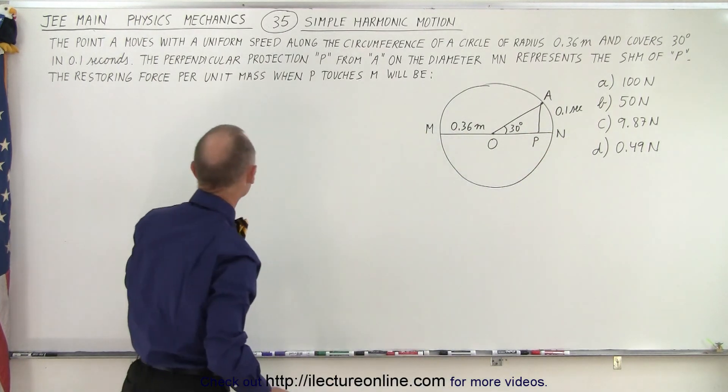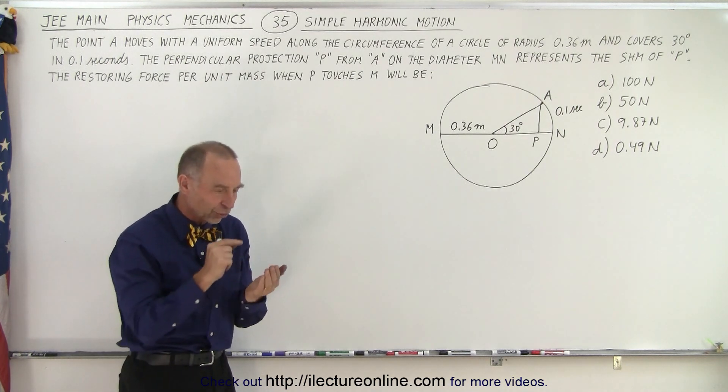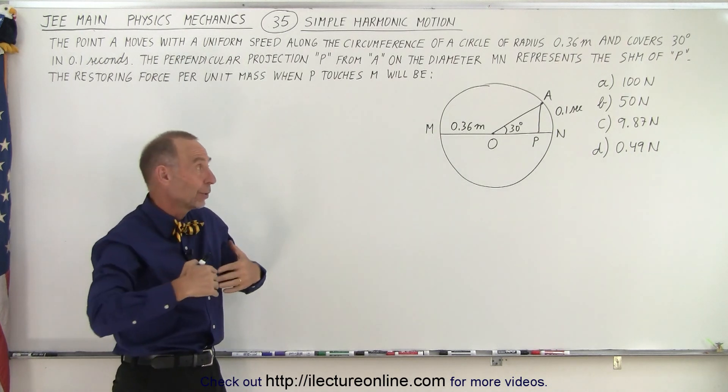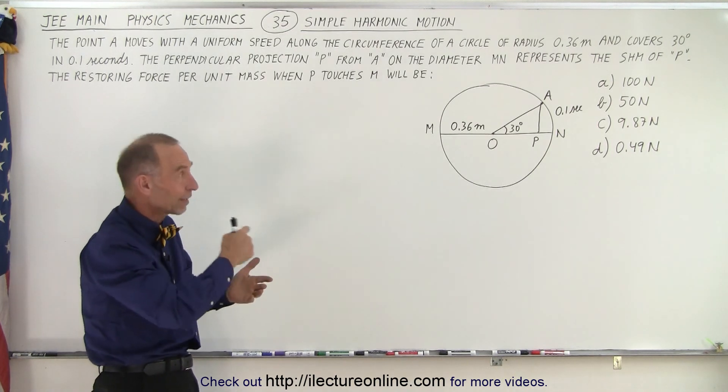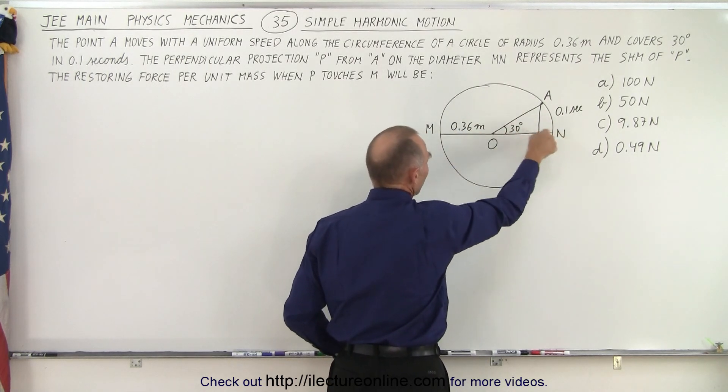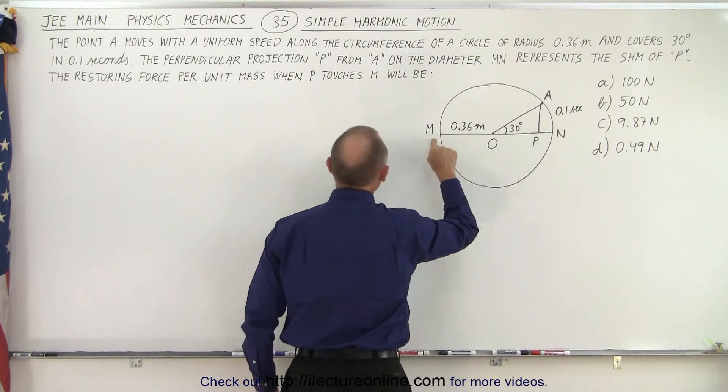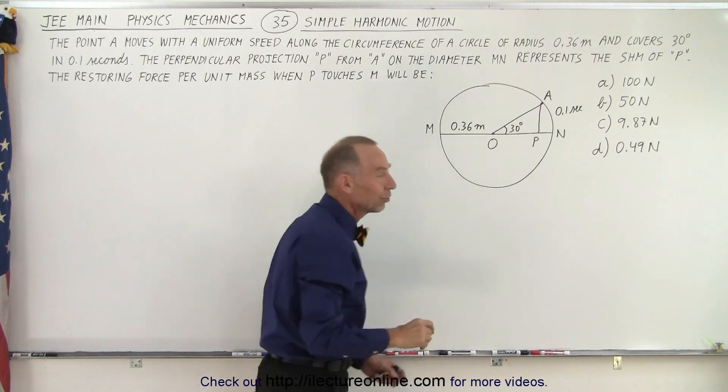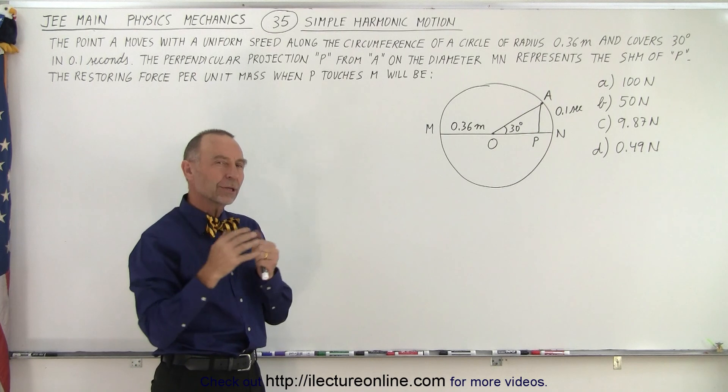The restoring force per unit mass when P touches M will be, so we're looking for the restoring force per unit mass. That's the key because we don't know the mass of the particle, and we don't even realize that we're talking about a particle going back and forth, represented mathematically by A going around like this. So imagine we have a particle of some mass going back and forth, and when it's at the end point, when it touches M, what will be the force per unit mass to restore the position back to the equilibrium point? So what's the principle here?